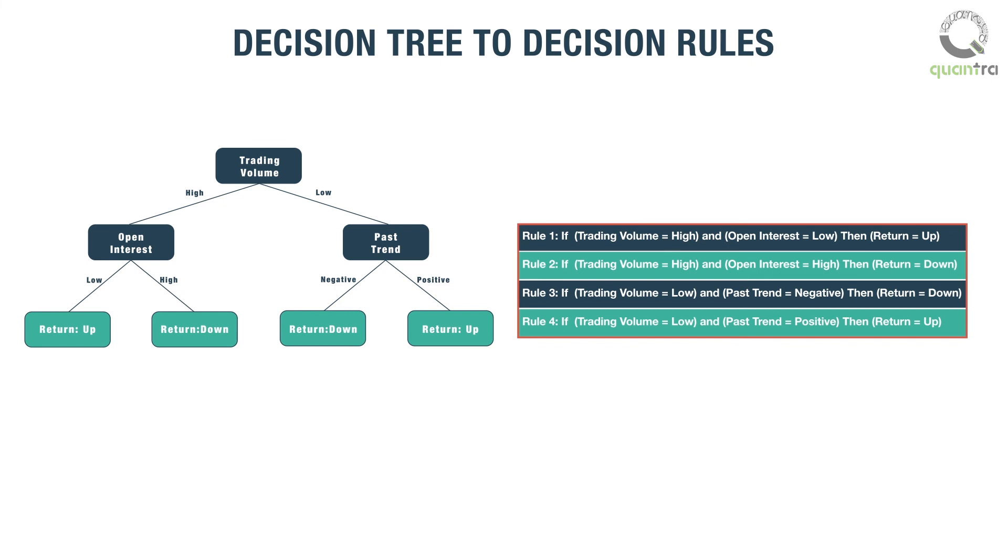Thus, decision rules are formed by mapping from the root node of the decision tree to the leaf nodes one by one.